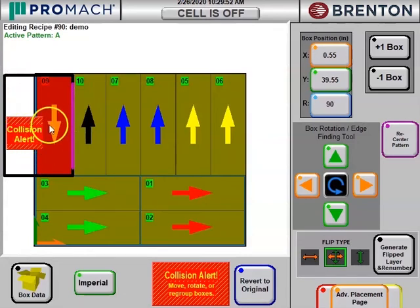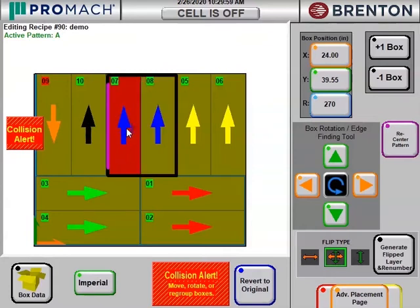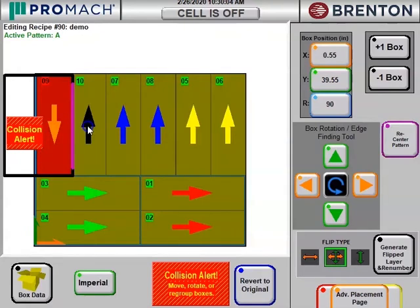So what we want to do here is get boxes 9 and 10 grouped together like these other boxes are, so that the robot will pick two boxes at the same time and drop them at the same time. And to do that, we want to go to our flip and swap page.